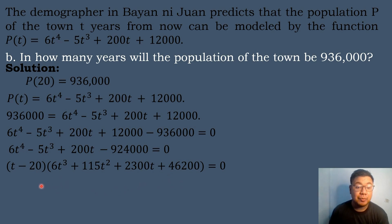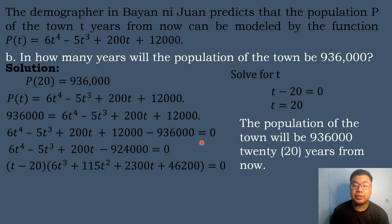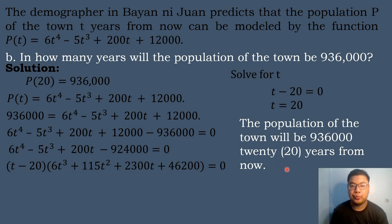Setting t − 20 = 0 and transposing gives t = 20. Therefore, the population of the town will be 936,000 twenty years from now.